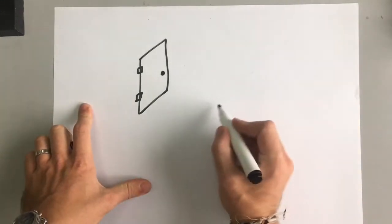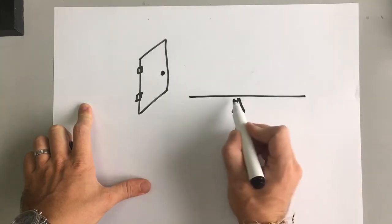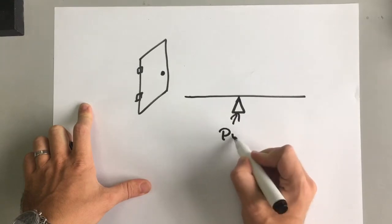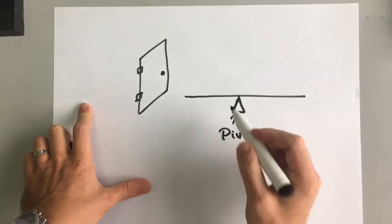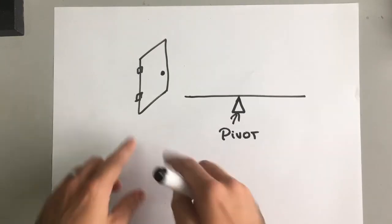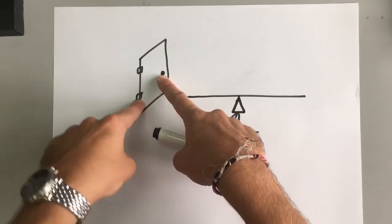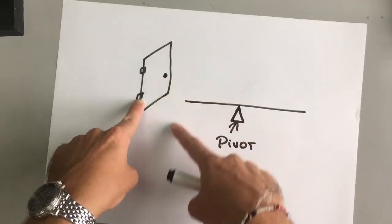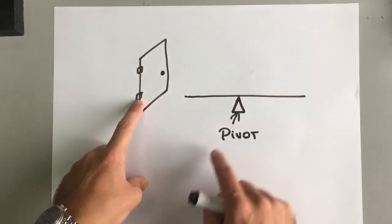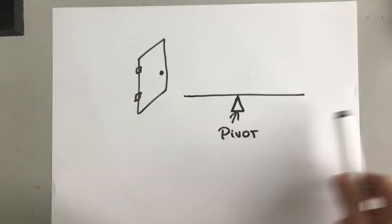A moment is a turning force and a turning force always involves a pivot. A pivot is a point on which the object does not move. So when you're opening a door, the place where the hinges are stays in the same place — you open and close the door but the hinges don't move. They are the pivot in this particular instance.